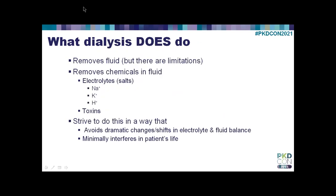So what does dialysis actually do? Dialysis allows us to remove fluid, though there are limitations. It allows us to remove chemicals in that fluid—electrolytes, sodium, potassium, and acid—and it allows us to remove toxins. We strive to do that in a way that avoids dramatic shifts in electrolytes and fluids, and we strive to do it in a way that interferes with your life to a limited extent.